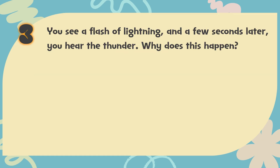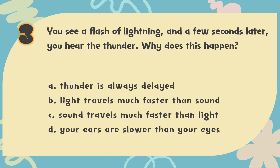Number 3: You see a flash of lightning and a few seconds later you hear the thunder. Why does this happen? The choices are: A. Thunder is always delayed, B. Light travels much faster than sound, C. Sound travels much faster than light, D. Your ears are slower than your eyes.